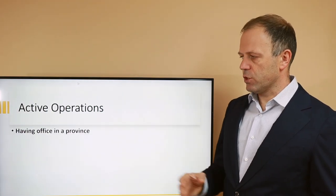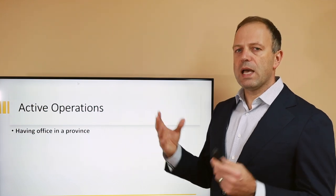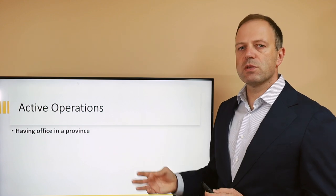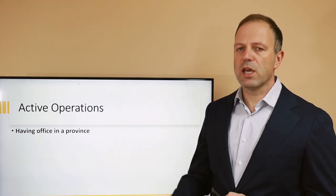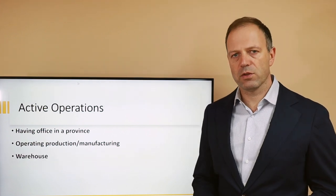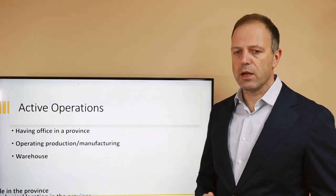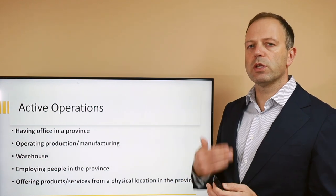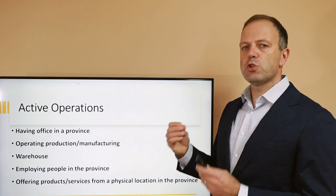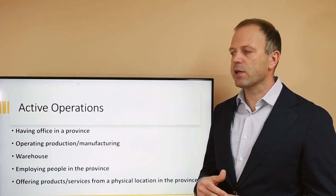So what does it mean to have active business operations? There is absolutely no definition of it in the law. In my opinion, active business operations include: having an office in that province — a physical location where your employees work; operating a production or manufacturing facility there even when your head office is elsewhere; a warehouse leased or rented by your corporation and operated in another province to distribute products; and having employees offering products and services on a constant, permanent basis in that province. These will constitute active business operations, meaning you generate income or create tax liabilities in that province and will be required to register extra-provincially.